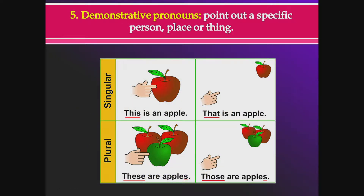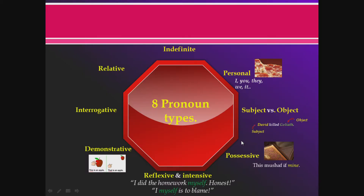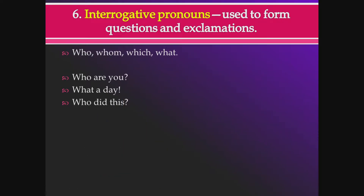Demonstrative pronouns are straightforward — they point out a specific person, place, or thing. There are only four: this, that, these, and those. 'This is an apple, that is an apple, these are apples, those are apples.' An easy way to remember them: 'this and that, these and those' — like the rhyme 'head and shoulders, knees and toes.' Demonstrative pronouns point to specific things.